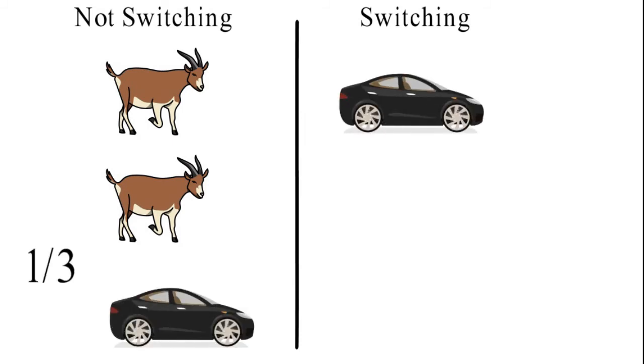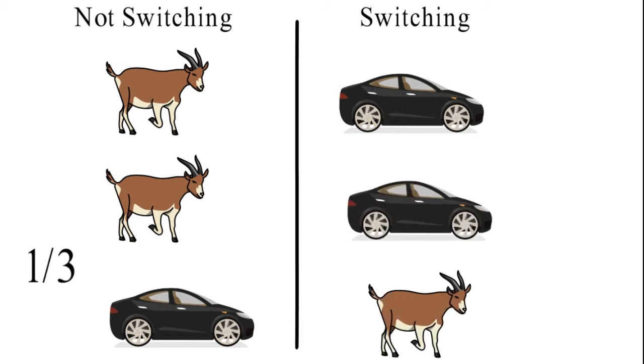And in the case of switching, we are getting car twice and goat only once. That means 2 by 3.